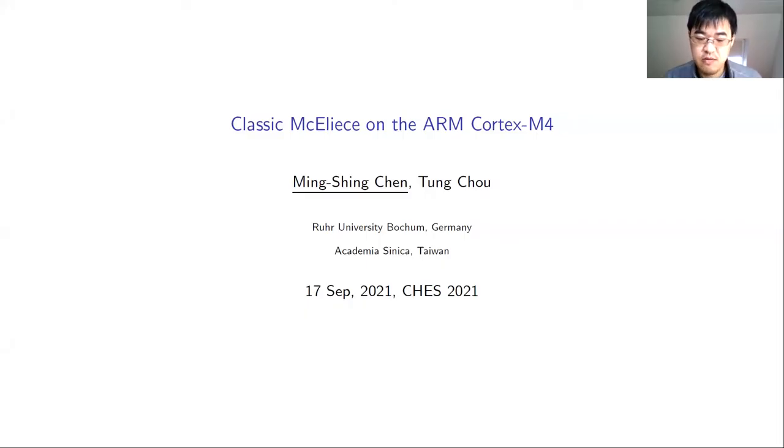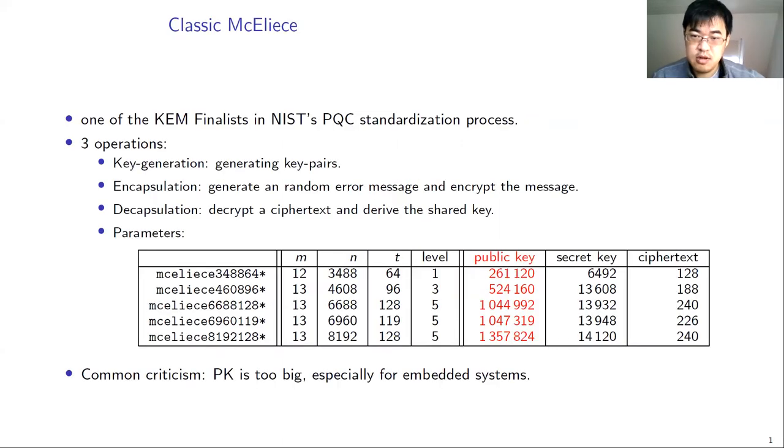Hello, and welcome to my talk for CHES 2021. My name is Ming-Shing Chen. This talk is about the paper Classic McEliece on the ARM Cortex-M4. This is a joint work with my colleague Zoto. The first page is the introduction of the Classic McEliece System. Classic McEliece is a key encapsulation mechanism. It is used for establishing a shared key for communication. It's based on a Goppa code public key encryption scheme. And it is a finalist in NIST's post-quantum cryptography standardization process.